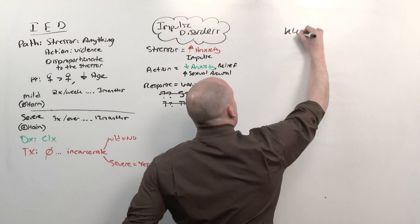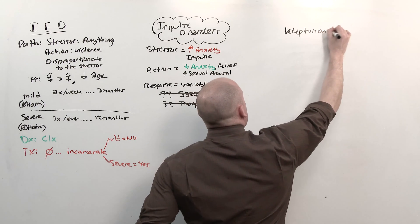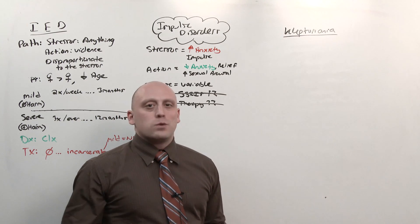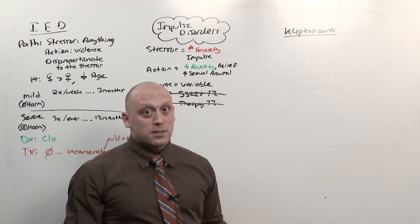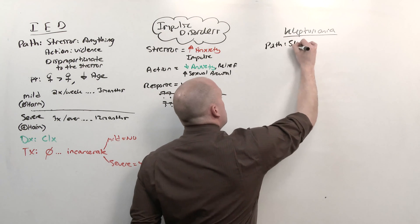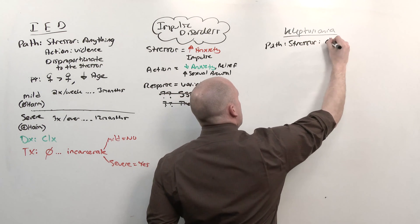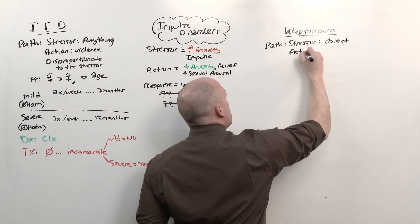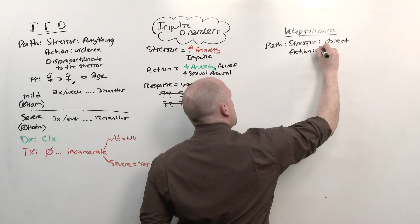The second is kleptomania. Now, idiomatically, we use that word, klepto, to mean anyone who steals anything. But, as you'll learn, it's not the case at all. The pathology here is that some stressor, which is usually the sight of the object, induces its compulsion to steal. The action, the impulse, is stealing.